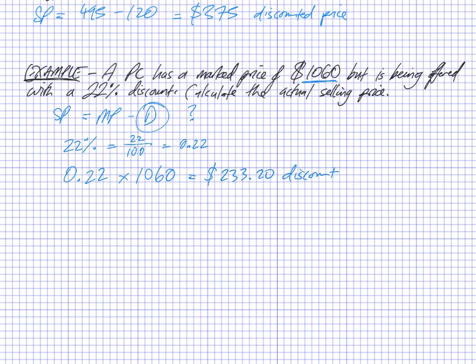Now I know what the discount is, I can take that off. So the selling price is going to be the marked price of $1,060 minus $233.20. It's going to be $826.80 discounted price.